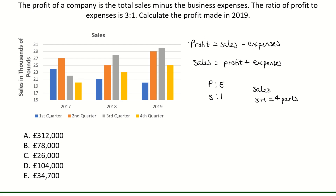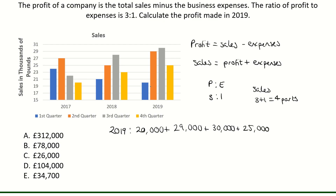Now we are after the profit made in 2019, so let's add up the sales for each quarter. For 2019, the sales are 20,000 plus 29,000 plus 30,000 plus 25,000 for each of these quarters, which gives us a value of 104,000. So those are our sales.